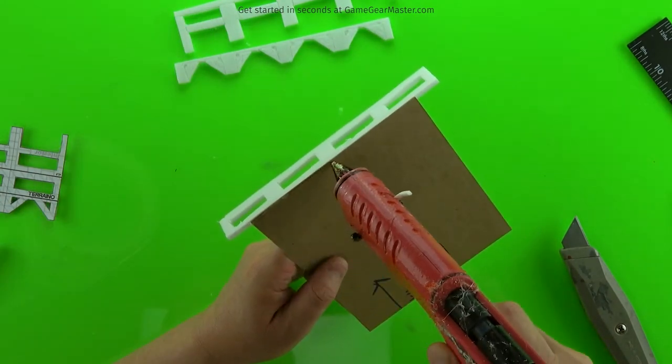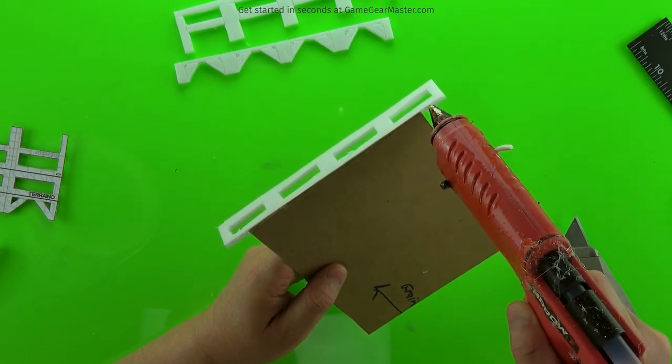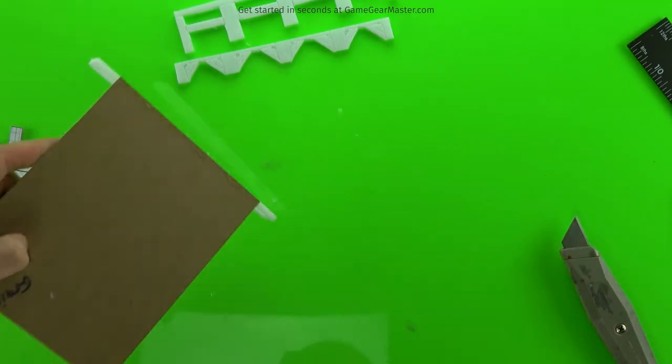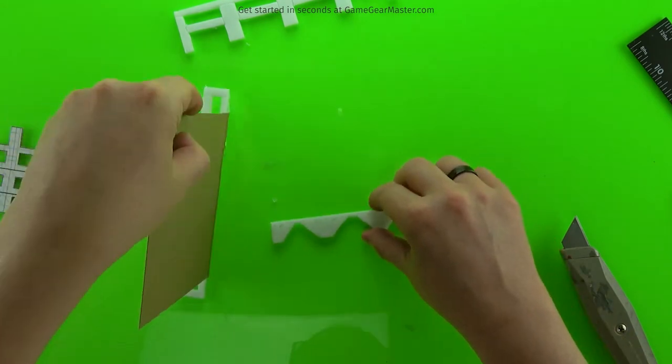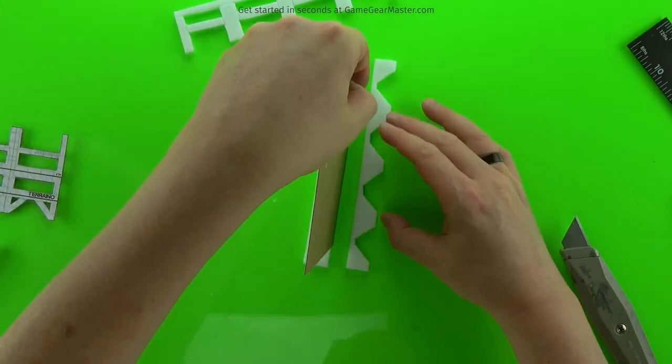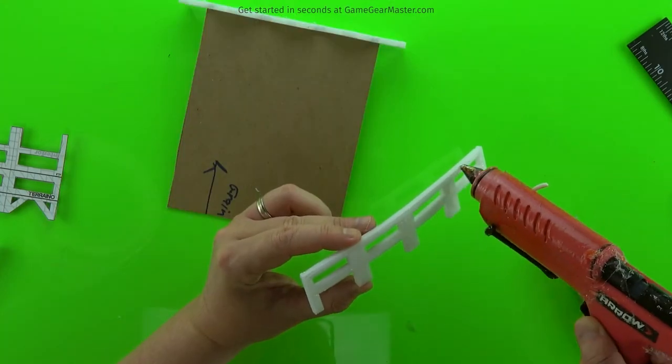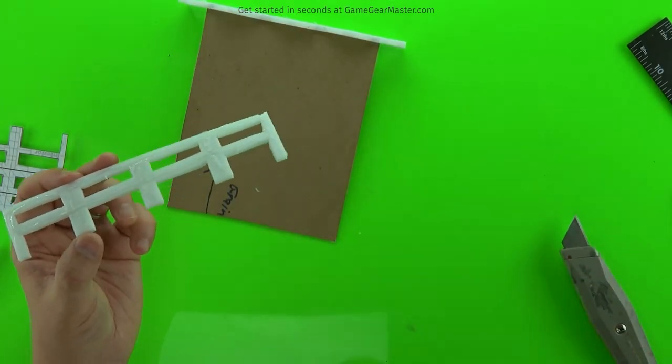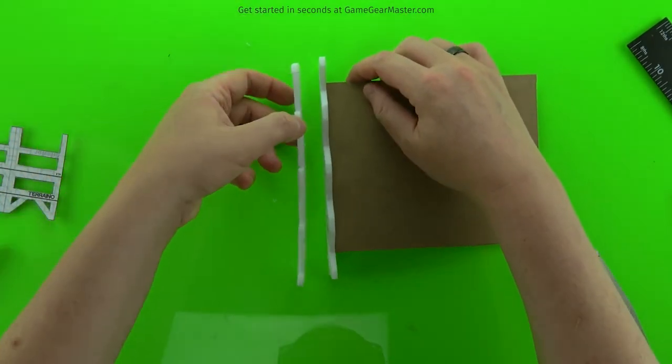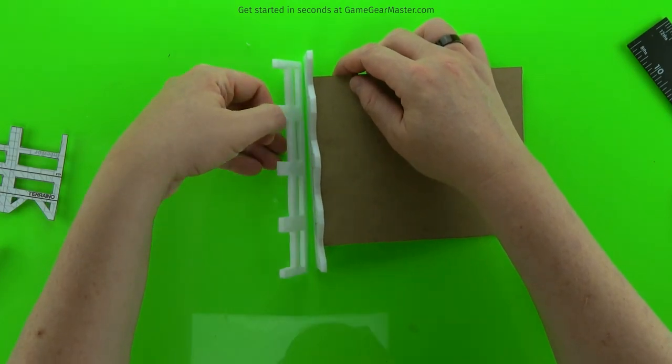And then we'll glue on the bottom piece and we'll use our work surface to line that up. And then we'll put down the last component on the front of the railing. And we'll use the work surface to line that up as well.